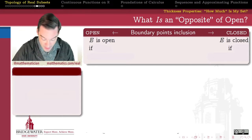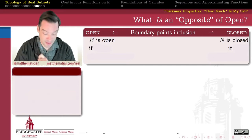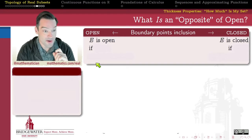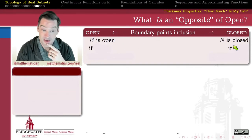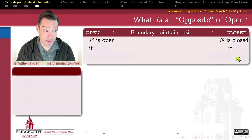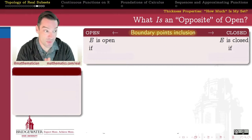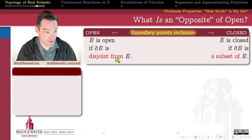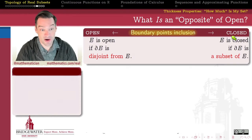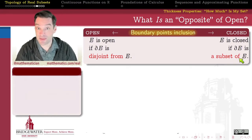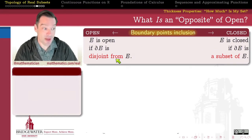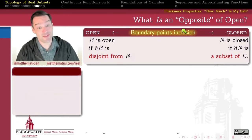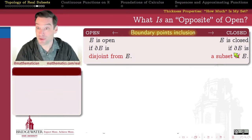We've already seen one example of a topological spectrum, where open sets are at one end and closed sets are at the other end. Closeness is at the opposite end of this spectrum from openness, and that spectrum is determined by how much of the boundary of my set I include. Open sets have boundaries totally disjoint from them; closed sets contain their entire boundary.